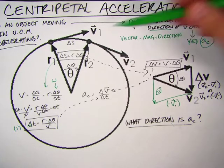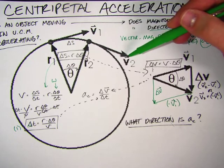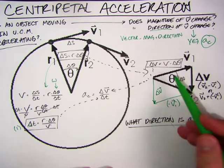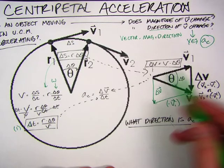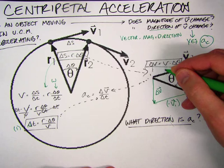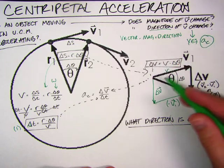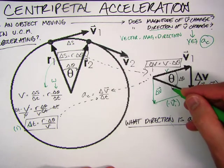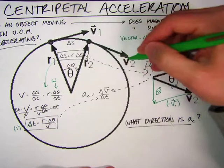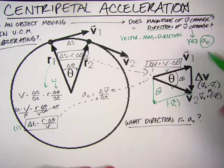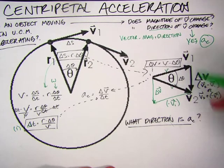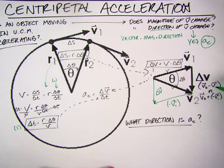Now, if we look at how V1 changes to V2. Well, V1, I'm going to draw, it's a vector pointing in this direction with a magnitude which we call V. V is the magnitude, and V2 has the same magnitude V, but now it's pointing in a different direction because it's rotated. So if we line up V1 and V2 and find the difference between the two, delta V, which is V2 minus V1, or V2 plus negative V1, as you've learned in adding vectors together.